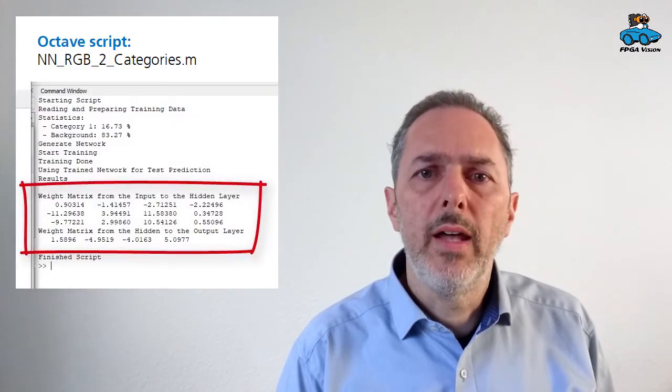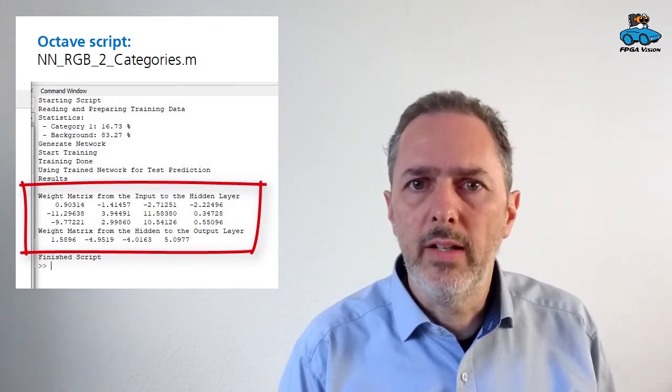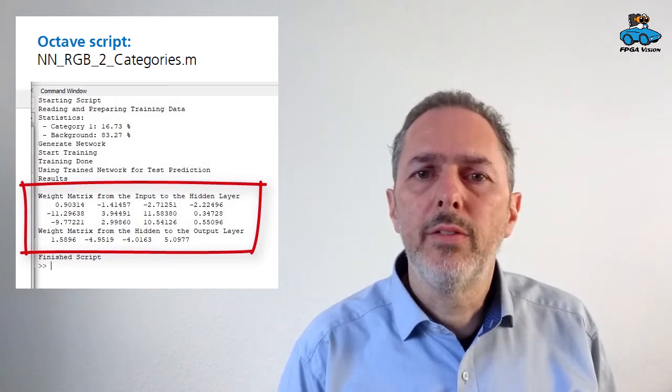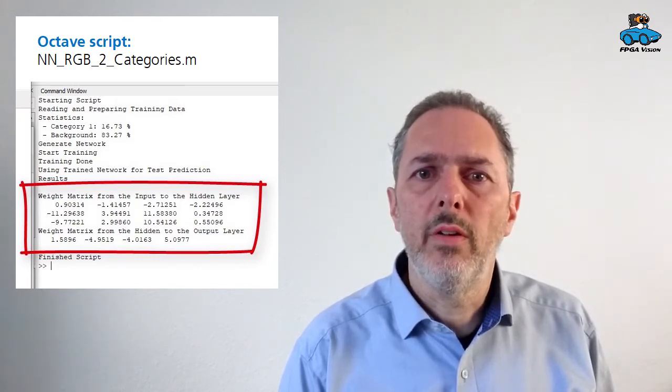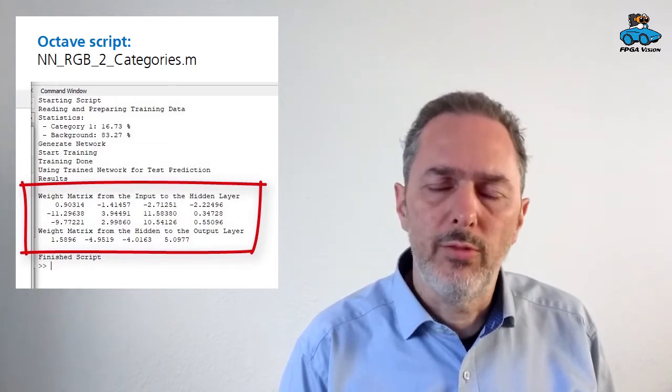We also had shown you training of the network. For this, we use this script, NN_RGB_two_categories. The script determined these parameters for the neural network, which are floating point. In this video, we want to show you how to use this information to design your circuit in VHDL for an FPGA.